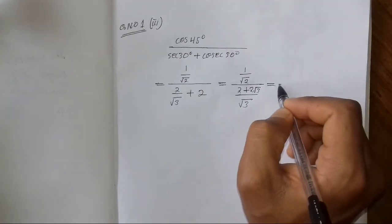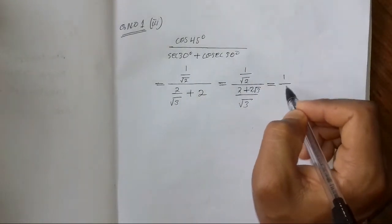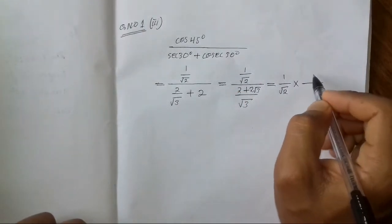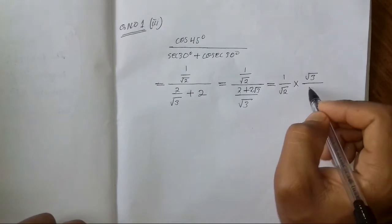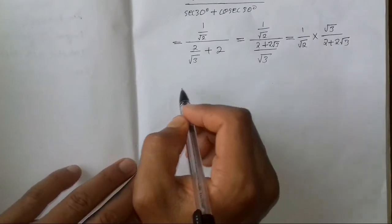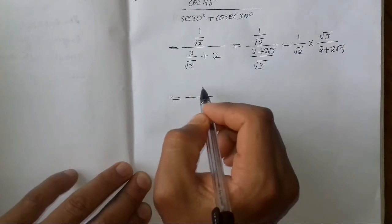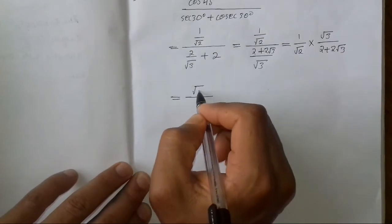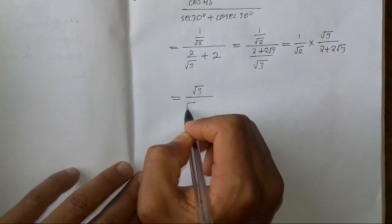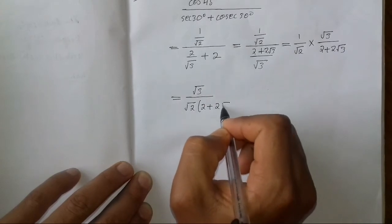As you can see, simplifying gives 2 plus 3 by root 3, then 3 by root 3, which is root 3 by 2, plus 2 root 3. You can determine the same function using this method: root 3 by 2 plus 2 root 3.